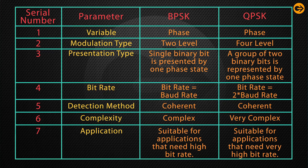The bit rate in BPSK equals the baud rate, but in QPSK the bit rate is twice the baud rate. The detection method in both BPSK and QPSK is coherent. In terms of complexity, BPSK is complex but QPSK is very complex. BPSK is suitable for high bit rate applications, while QPSK is suitable for very high bit rate applications.